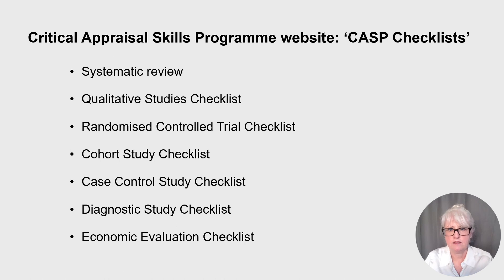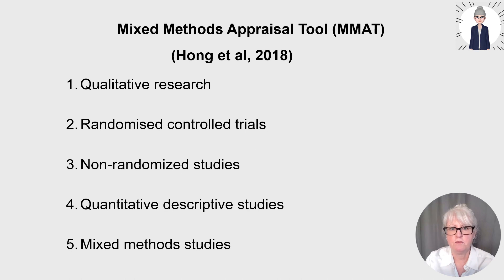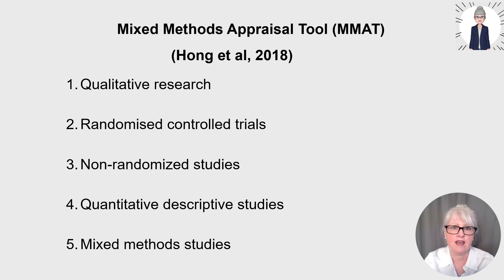There are also critical appraisal checklists to help guide a critique. The Critical Appraisal Skills Programme (CASP) website provides free checklists for systematic reviews, qualitative studies, randomized control trials, cohort studies, case control studies, diagnostic studies, and economic evaluation studies. You might also look at the Mixed Methods Appraisal Tool from Hong et al., which appraises the quality of five categories: qualitative research, randomized control trials, non-randomized studies, quantitative descriptive studies, and mixed method studies. These checklists with guiding questions can be very helpful before you start your critique.